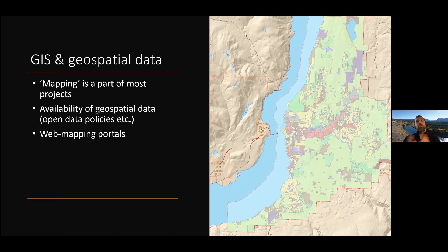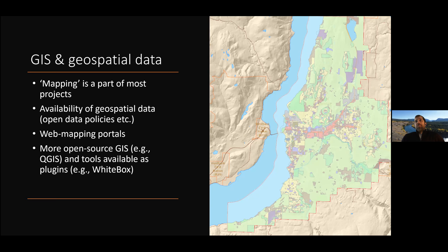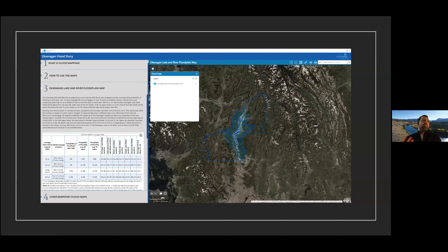Web mapping portals have taken away some of the technical challenges of working with spatial data. We also have so much more GIS software now — there are still big companies like Esri who dominate the market, but we have fantastic open source GIS platforms that are free, like QGIS or Quantum GIS, as well as tools available as plugins continuously being developed, like Whitebox Tools. An example of these mapping portals is the Okanagan Flood Story — a portal that hosts geospatial data formatted to allow you to interact with it. Some portals allow you to bring in new datasets — designed to allow you to map and explore data, which is really powerful for engaging with stakeholders.